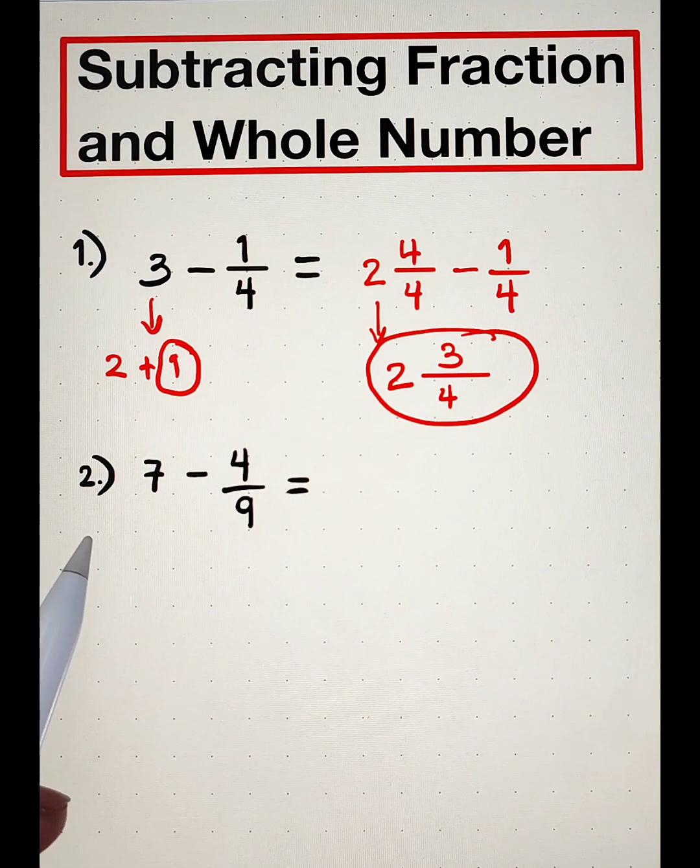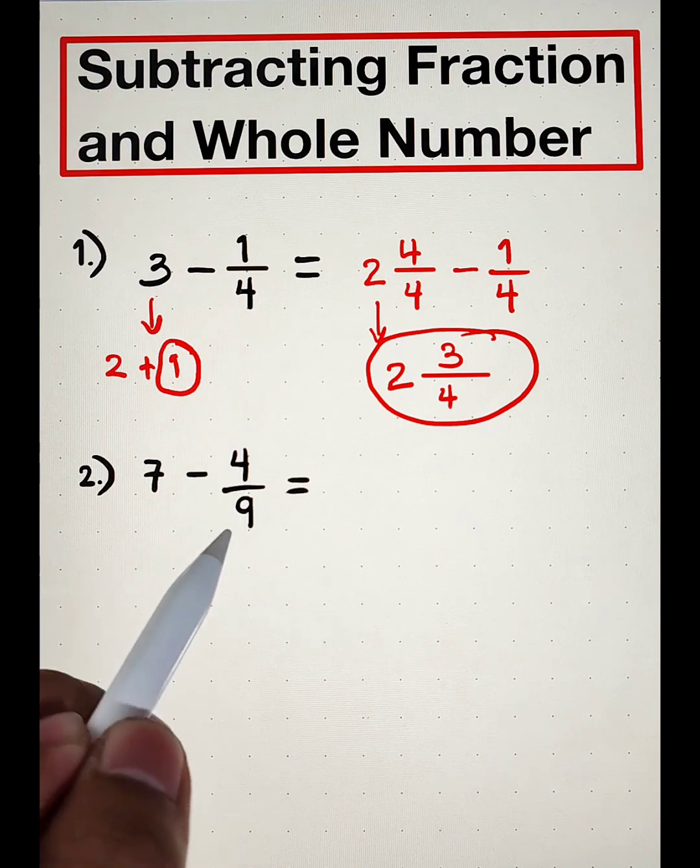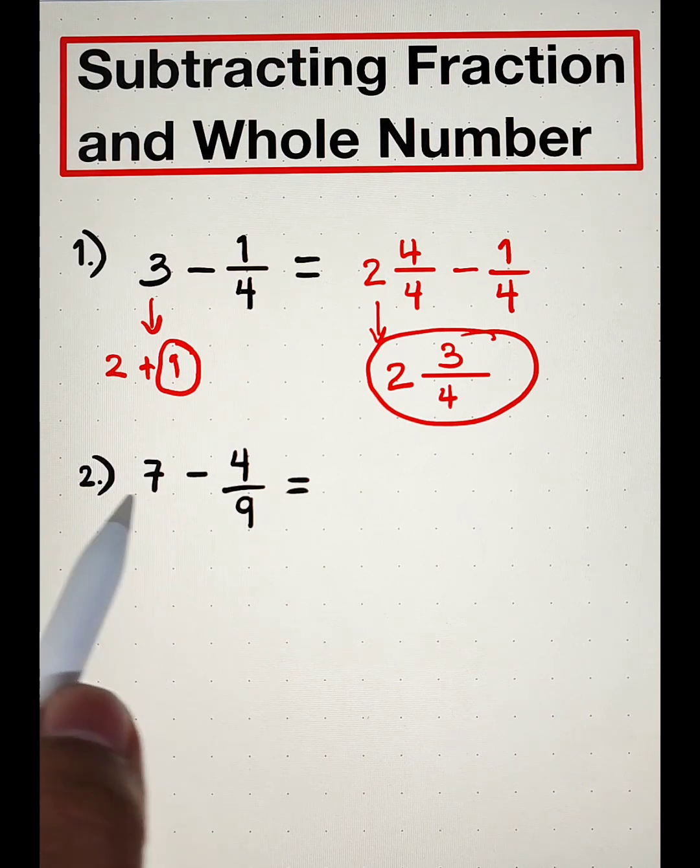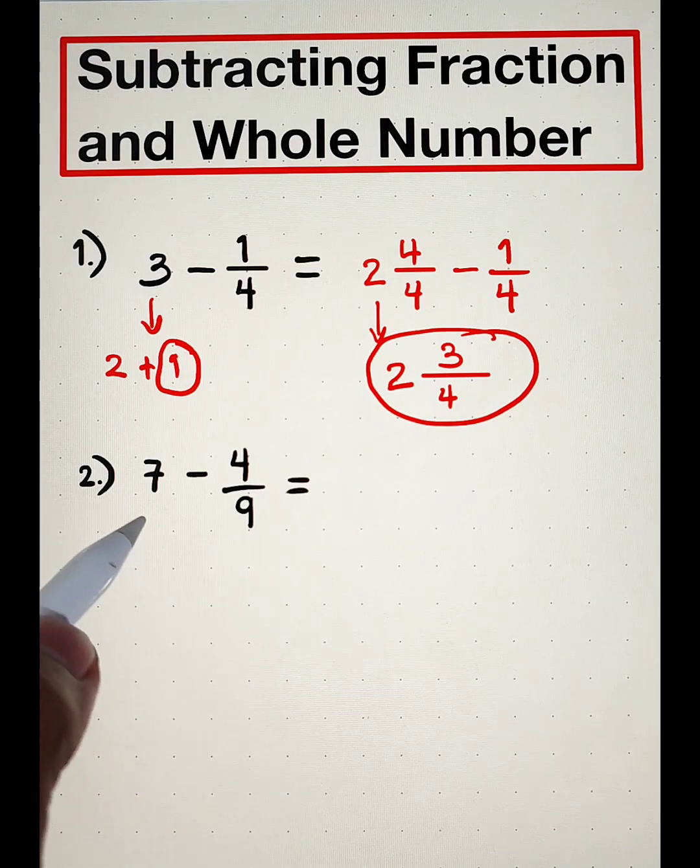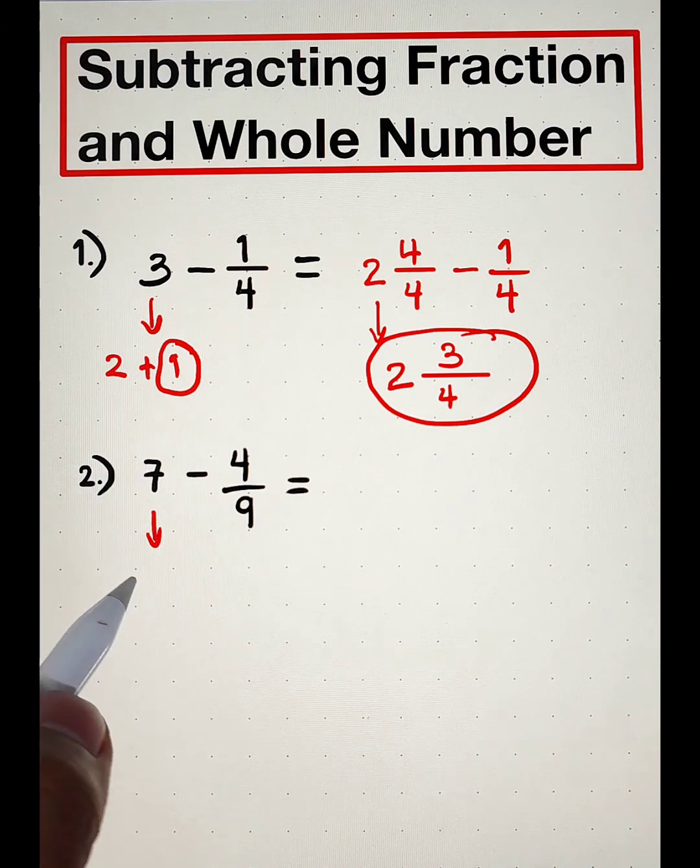Now let's move on to item number 2. For number 2, we are given 7 minus 4 over 9. As you can see, we cannot directly subtract them. So we need to do is to break down 7. We will borrow 1. And it goes like this.